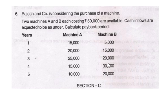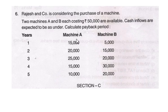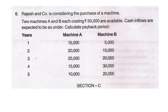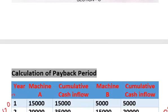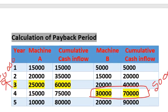We are asked to find out the payback period. To calculate the payback period we have two formulas. When cash inflows are even, we use: Initial Investment divided by Annual Cash Inflows. When cash inflows are not even, we use the second formula. In this problem, cash inflows are not even for Machine A, so we use the second formula.